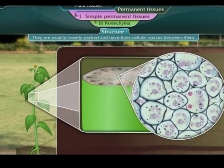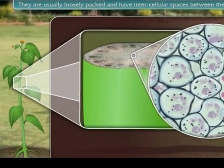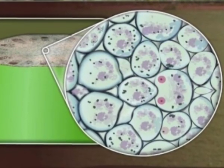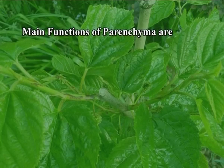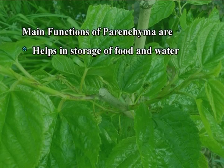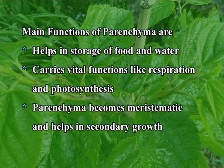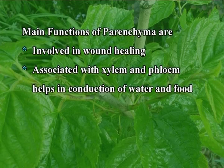Parenchyma is often called ground tissue, present in cortex, pith, mesophyll of leaves, rind of fruit and endosperm of seed, also associated with xylem and phloem. It is a living simple permanent tissue with thin-walled cells; cell wall is made up of cellulose. Cells are oval, spherical, hexagonal, with or without intercellular spaces, have large nucleus, vacuoles, and developed organelles with reserve food materials. Main functions include storage of food and water, respiration and photosynthesis, secondary growth, wound healing, and conduction of water and food.